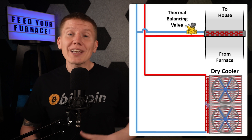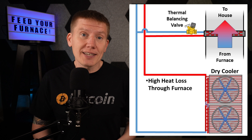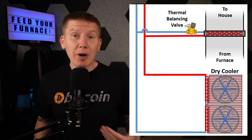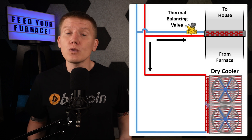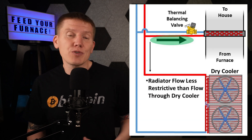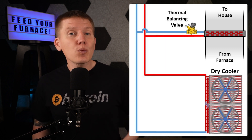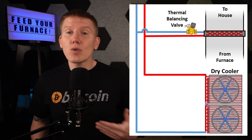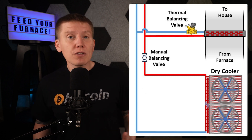If instead the radiator starts pulling a lot of heat from the fluid, the temperature at the thermostatic valve will decrease and the valve will open up, allowing more fluid to pass through the radiator. The limit to how much fluid can get to the radiator is going to be dependent on the relative flow restrictions between the two fluid paths. For this configuration to work, the flow path through the radiator must be less restrictive than the flow path through the dry cooler. The dry cooler will likely be further away, resulting in more fluid resistance. You could also make the piping to the radiator a lot bigger than the piping to the dry cooler, or you could add balancing valves to restrict the flow to the dry cooler.